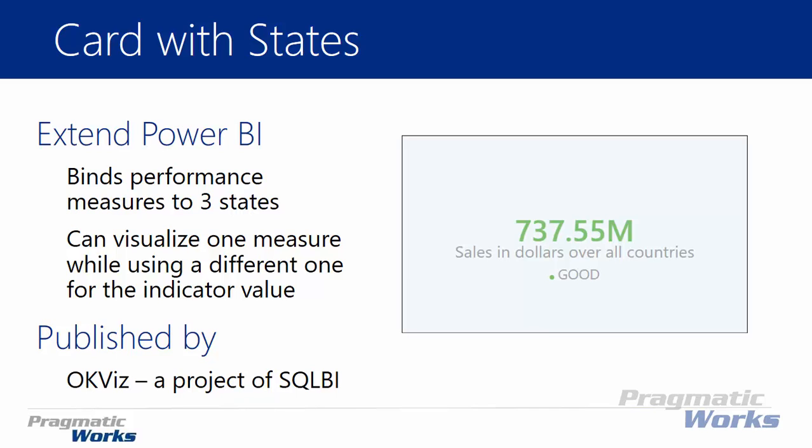You can visualize one or more measures — you can have one measure being shown while another is used for the indicator. As you can see in the screenshot on the right, it shows whether you're in the 'good' state for that measure. That reference of 'good' can be determined by a completely different measure than what you're displaying, so you have some flexibility there.